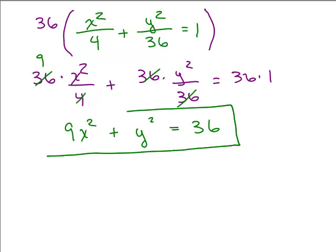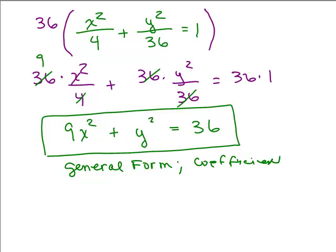So this is actually the general form of that ellipse. And notice the coefficients of x² and y² are different, so that's why we know it's not a circle. If they're the same, it's a circle.